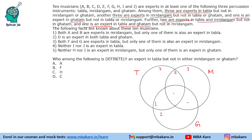Now let's fill the values. It says both A and B are experts in mridangam, but only one of them is also expert in tabla. So A and B will come — one of them in the mridangam-only region and one of them in the tabla-and-mridangam region, because both have to be expert in mridangam and one should also be in the common region. D is an expert in both tabla and ghatam — that is only one person, that is D. Both F and G are experts in tabla, but only one of them is also expert in mridangam. So similarly, F and G both are experts in tabla and one of them is in the tabla-and-mridangam region as well. So one of G or F and another of B or A fill those 2 spots.